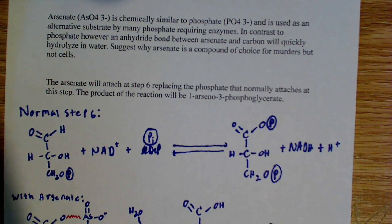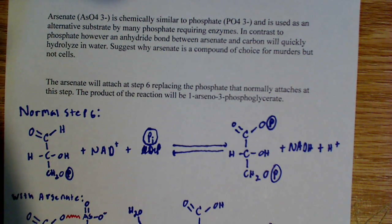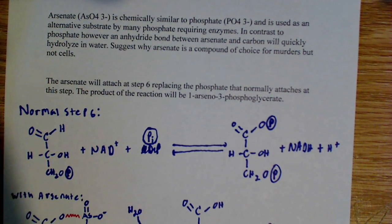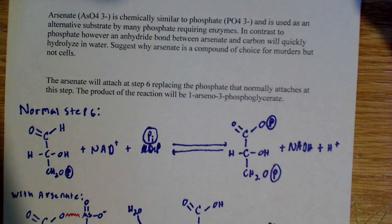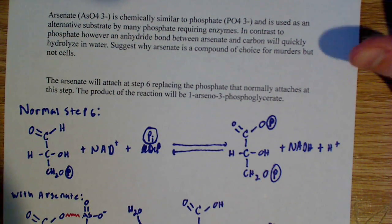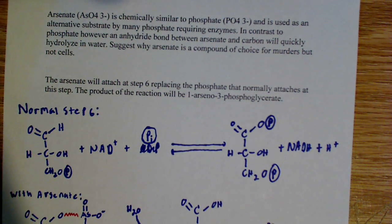Arsenate is chemically similar to phosphate, and it's used as an alternative substrate by many phosphate-requiring enzymes. Basically, certain enzymes use phosphate or add phosphate groups to a molecule, and by adding those phosphate groups, they can substitute it for arsenate in some cases. In contrast...